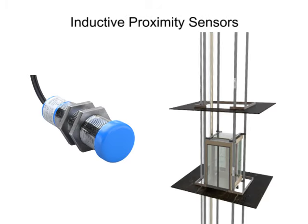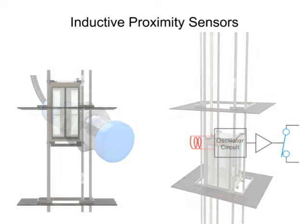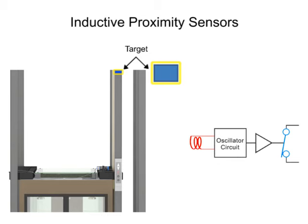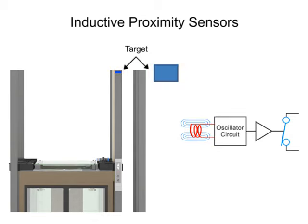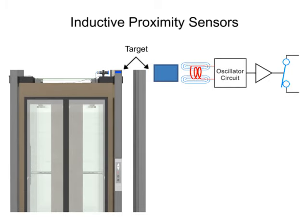Inductive sensors can detect a target from 0.5 mm to 40 mm. They only detect metallic targets and therefore use a magnetic field to detect its presence. When a ferrous metal material enters the magnetic field, electrical currents known as eddy currents are induced on the metal surface. These eddy currents induce a power loss within the oscillator circuit and in turn cause a reduction in the amplitude of the oscillations. This is known as the echo or eddy current killed oscillator principle.